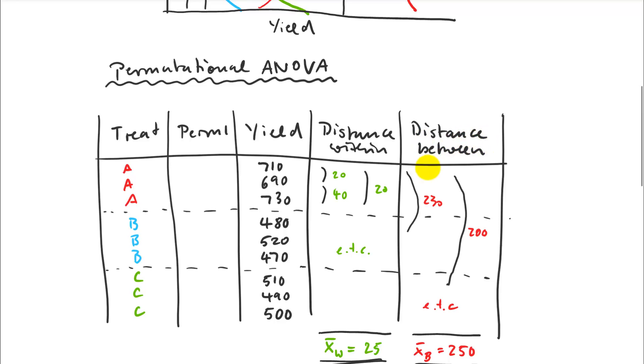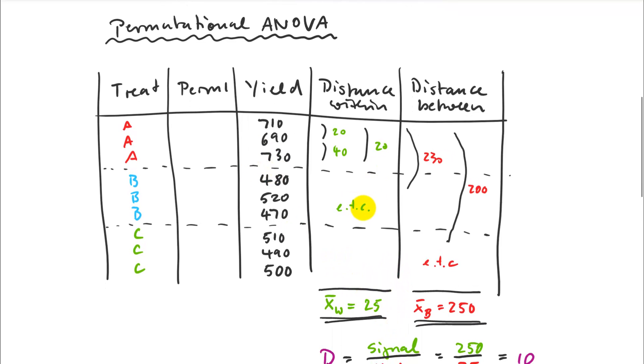And then I also calculate the differences between. So those are bigger in this case. So 710 minus 480 is 230. And 710 minus 510 is 200. And I can do all the combinations, obviously. And in the end, I just take the average of my differences within and differences between. I didn't do that because it's lots of combinations, so that's for the computer to do. But let's just assume that my distances within are relatively small, so let's say 25, looks like about 25. And the distances between are quite big, so let's say 250.